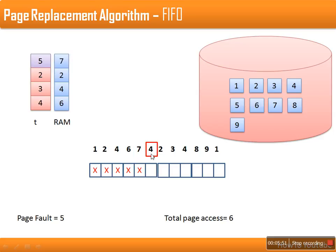The next page required is four, and that page is already available in RAM. When a referenced page is found in RAM, this is known as a page hit. Similarly, page number two is also available in RAM, so this will also result in a page hit.